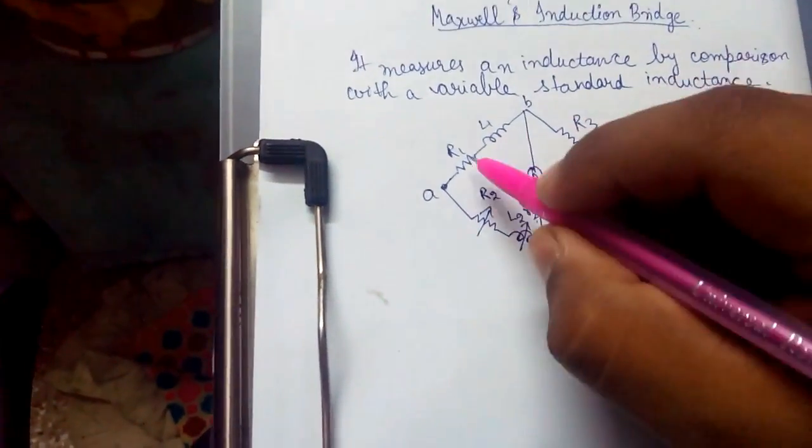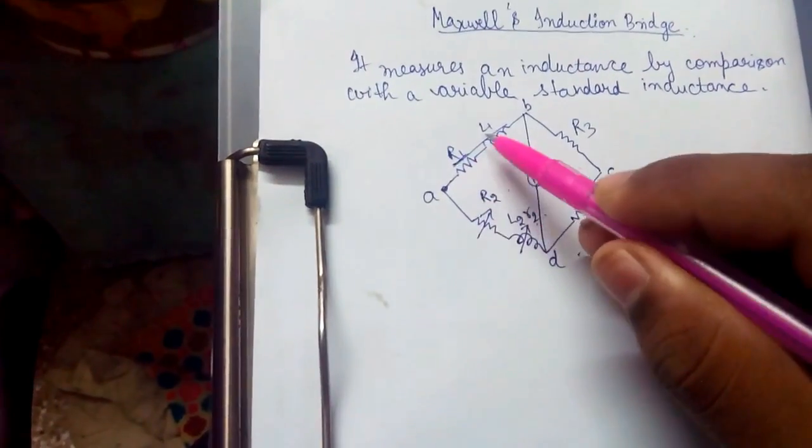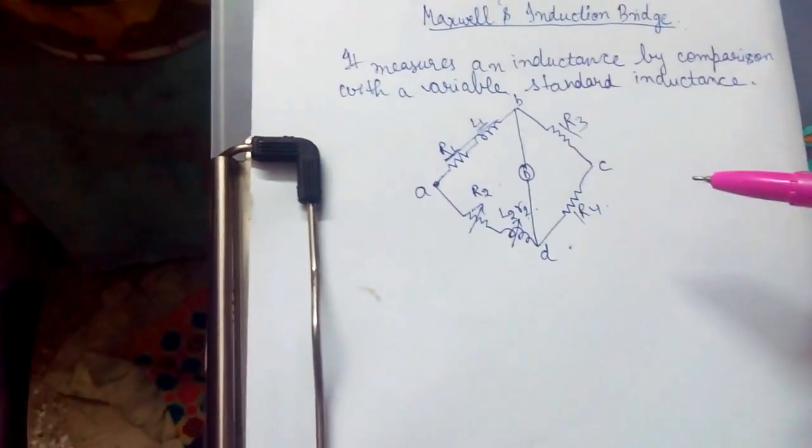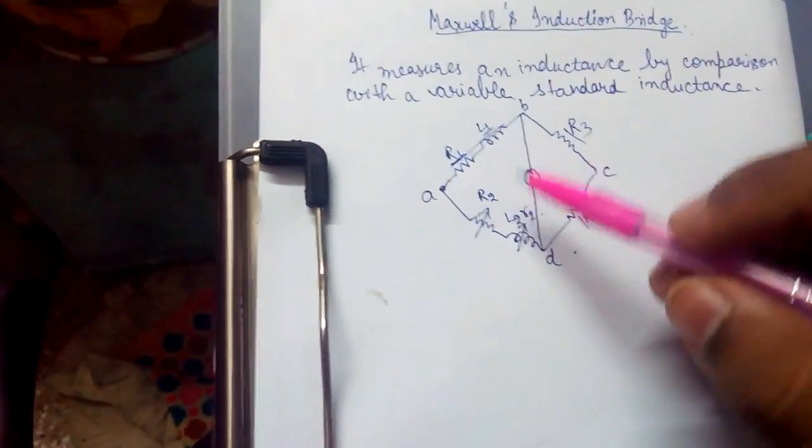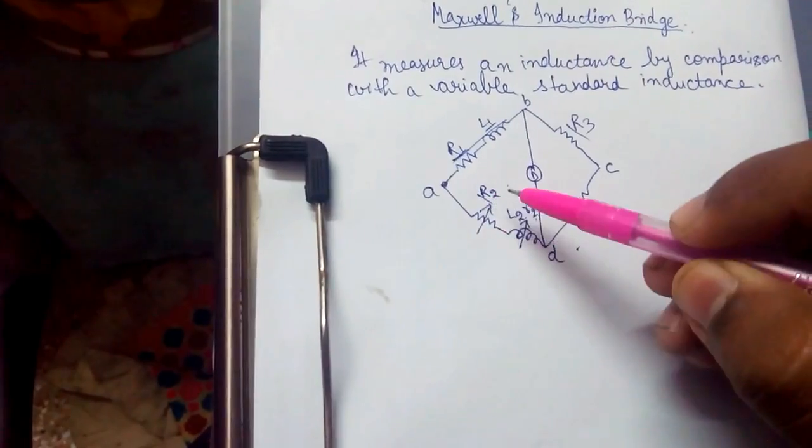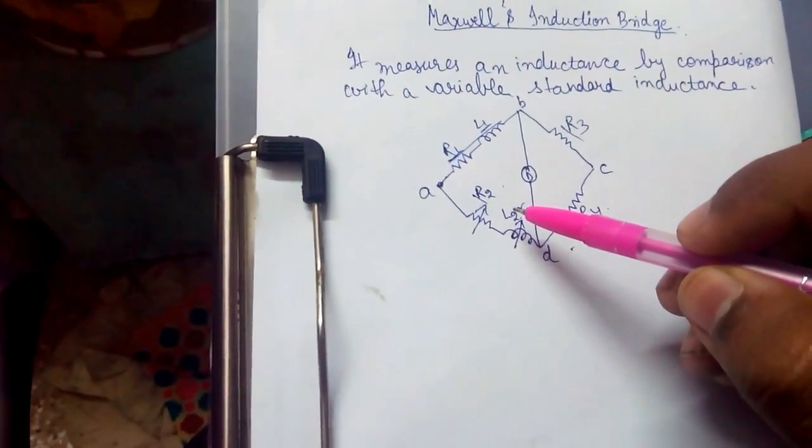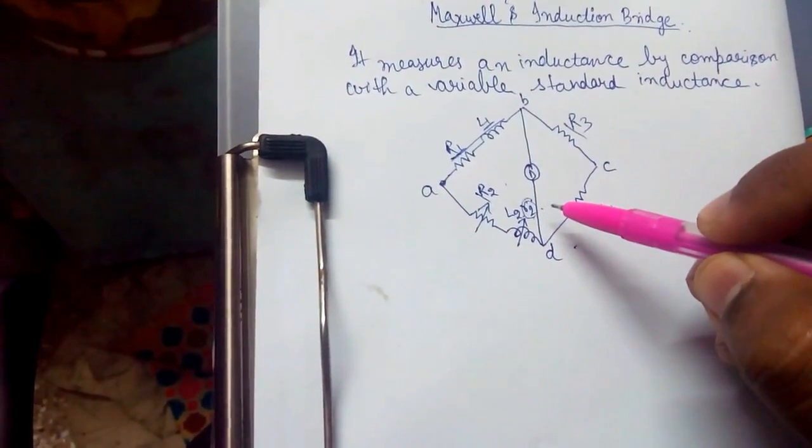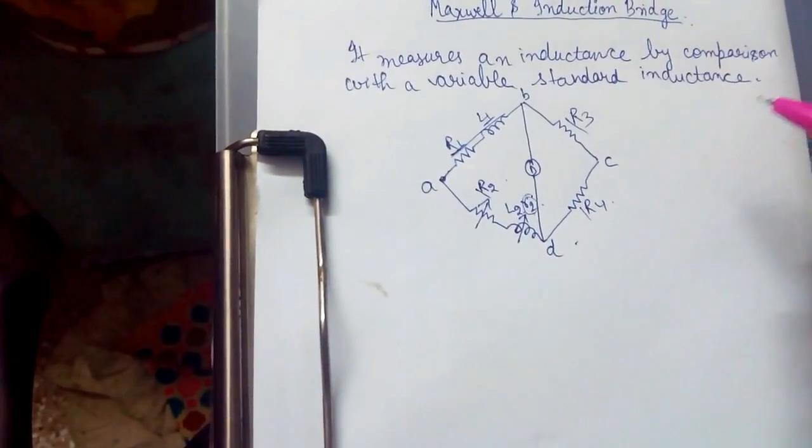Where R1L1 are the unknown resistance and inductance respectively. R3R4 are non-inductive resistances. L2 and R2 are the variable inductance and resistance. And R2 is the variable resistance in series with L2.